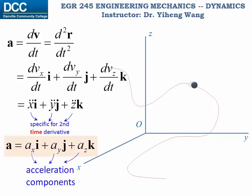And it can also be written in Cartesian vector form as axi plus ayj plus azk, and ax, ay, az are the acceleration along the x, y, z directions respectively. These are known as acceleration components.